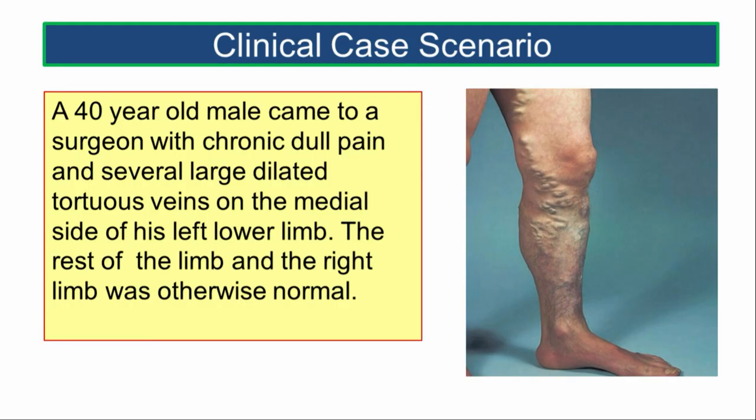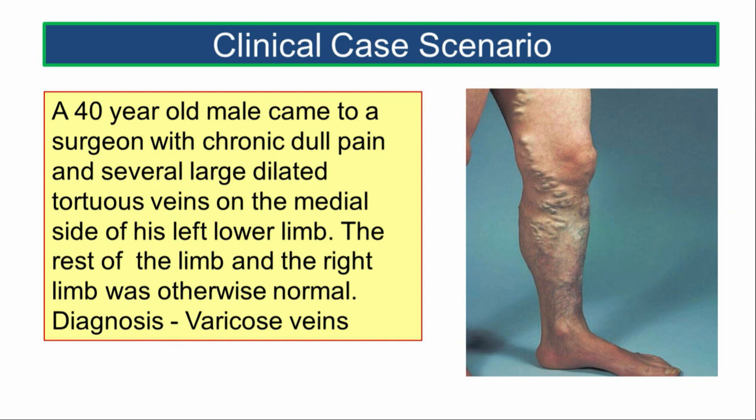Let us first see a clinical case scenario. A 40-year-old male came to a surgeon with chronic dull pain and several dilated tortuous veins on the medial side of his left lower limb. The rest of the limb and the right limb was otherwise normal. The diagnosis given was of varicose veins. Let us keep these symptoms in mind and proceed through the lecture.